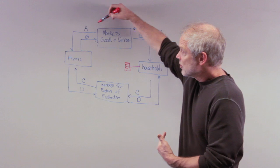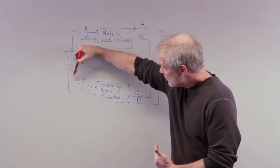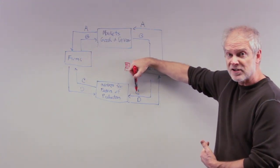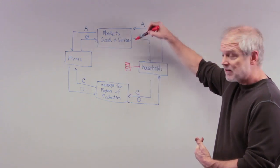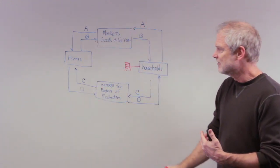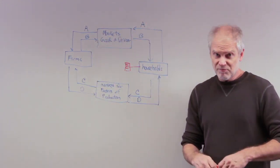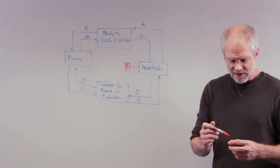Money out of the flow means there's less money spent in this market here, which means there's less money going to firms, which means firms have less demand for factors of production, employment, etc. So this simple diagram can be expanded pretty easily to capture a lot more complications.